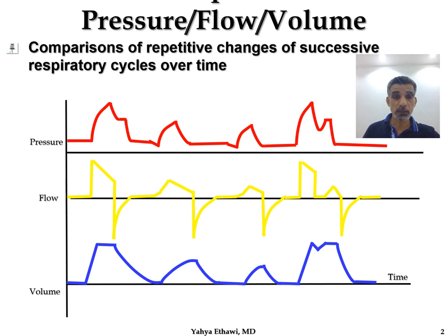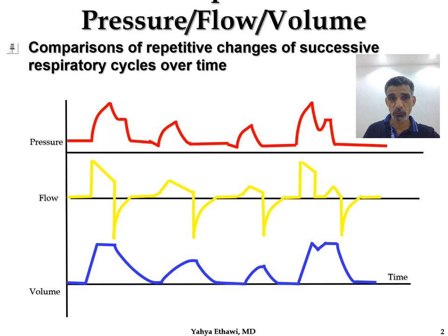You can see a mandatory breath in the first pressure wave. The first breath looks like a mandatory one; the second and third look like spontaneous; and the fourth looks like combined — spontaneous and mandatory — however it's not synchronized. When I look at the pressure, I know the mode is not providing assistance, which means it's either SIMV or another mode with a high trigger, or the flow sensor is not working. There is no synchronization, so either the baby is fighting the ventilator or we are using a non-synchronized mode.